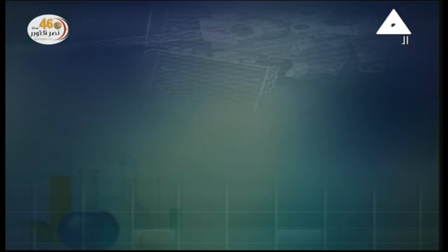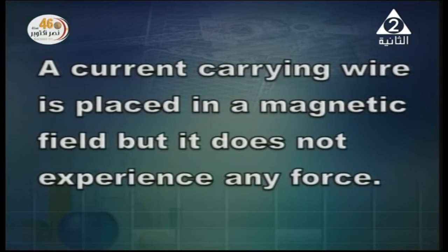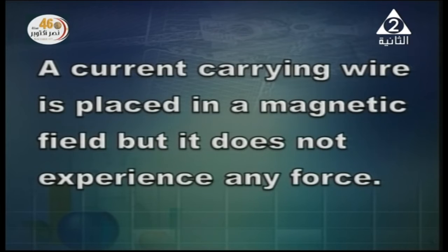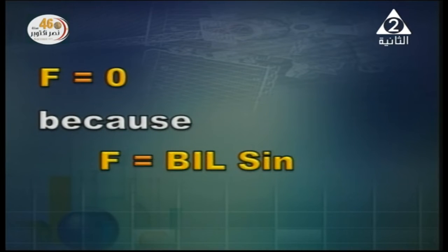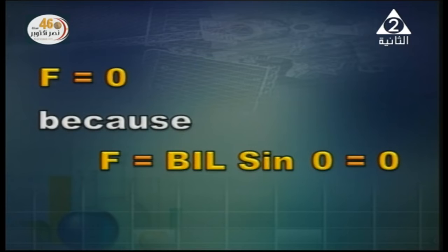A current-carrying wire is placed in a magnetic field but it doesn't experience any force. What is your explanation? The wire must be placed parallel to the field — theta is zero. When theta equals zero, the force equals zero, because the force is given by B I L sin theta, and sin 0 equals zero.